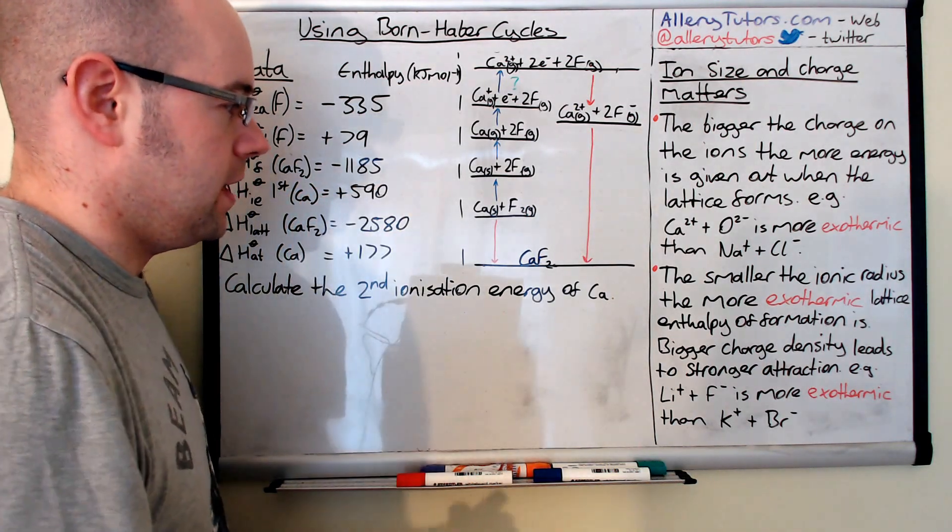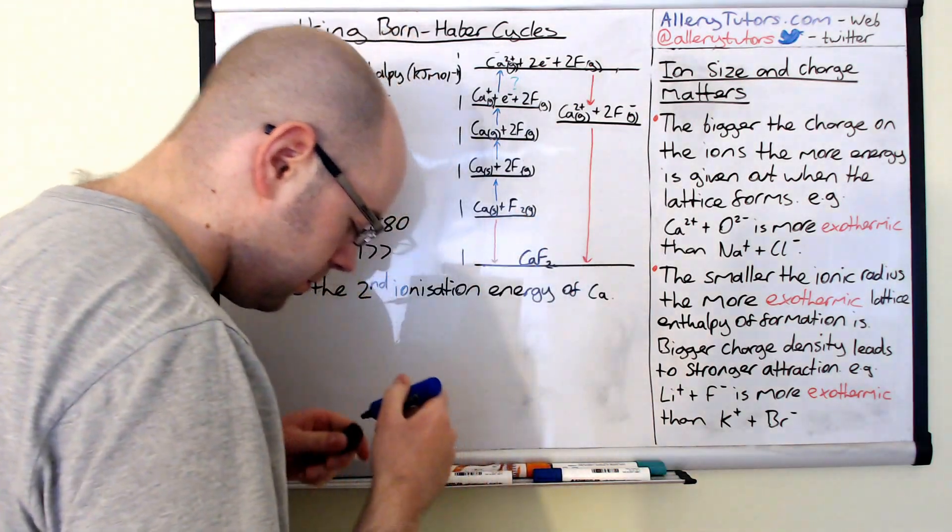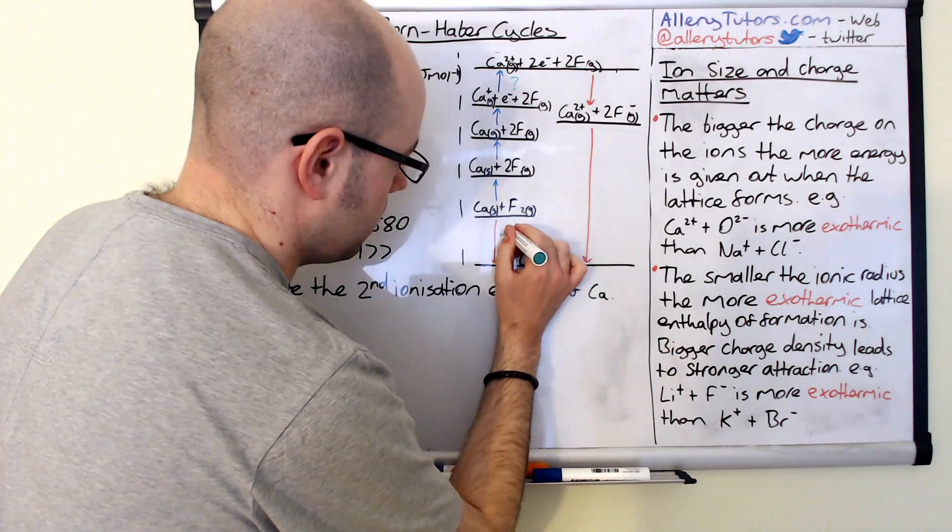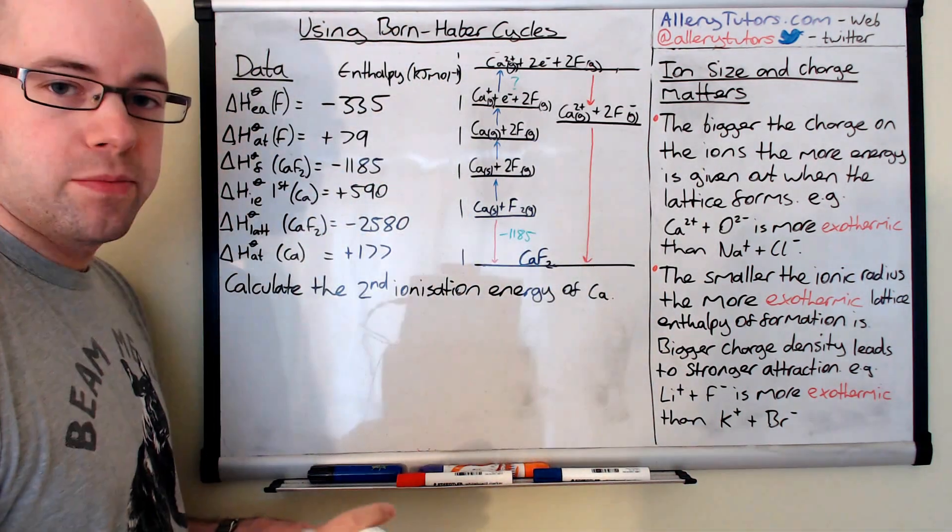So we're going to put that in there. Do this in green so it stands out. So minus 1185. Okay brilliant.